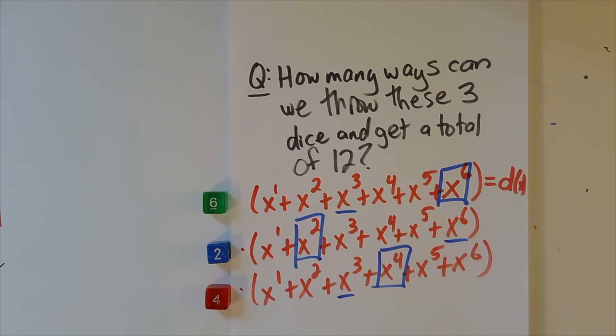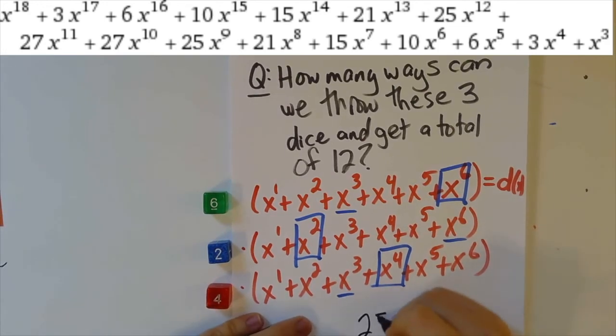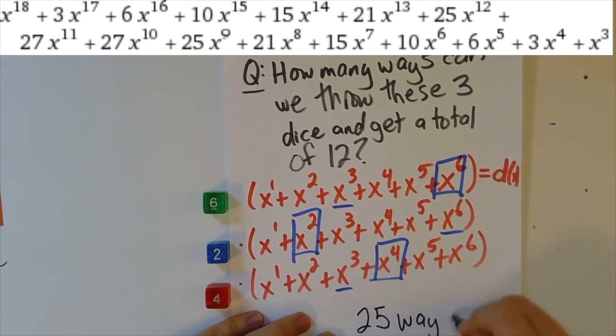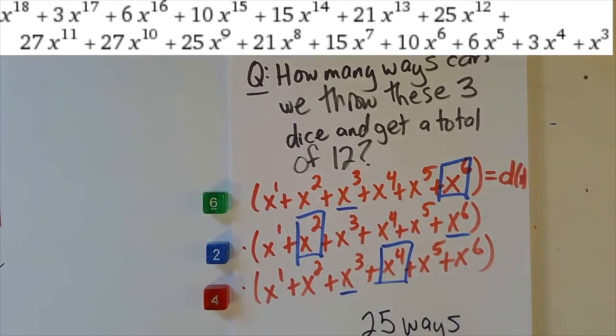So I have gone ahead, and for your convenience, I've multiplied these all out in Wolfram Alpha, which gave me this. So here is sort of an ugly polynomial at the top of your screen. But in particular, this ugly polynomial at the top of your screen has lots of terms. But if you look at the x to the twelfth term, you'll see that its coefficient is 25. And so the answer to this question is that, in fact, there are 25 ways to do this. So if you can multiply out this polynomial, then you'll go ahead and get the answer here.